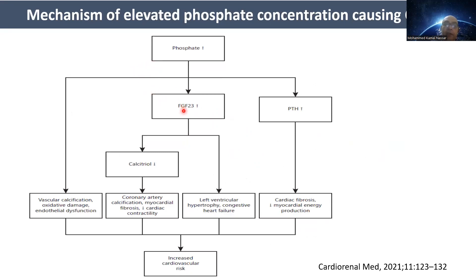Hyperphosphatemia results in increased FGF23 and parathyroid hormone, leading to vascular calcification, oxidative damage, endothelial dysfunction, coronary artery calcification, myocardial fibrosis, decreased cardiac contractility, LVH, congestive heart failure, and cardiac fibrosis — all resulting in increased cardiovascular risk and mortality.